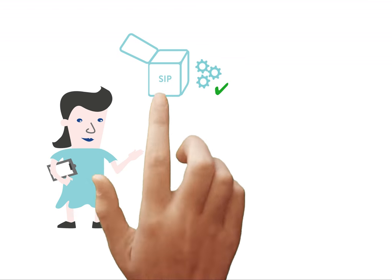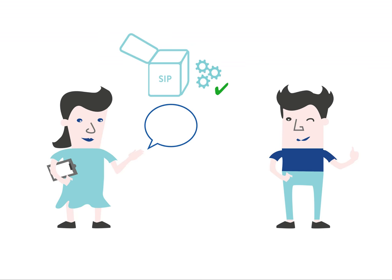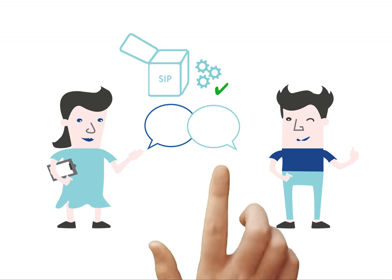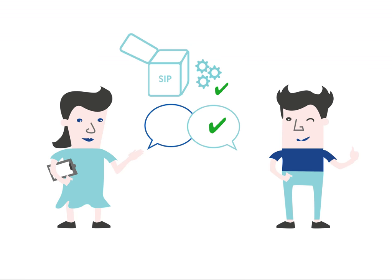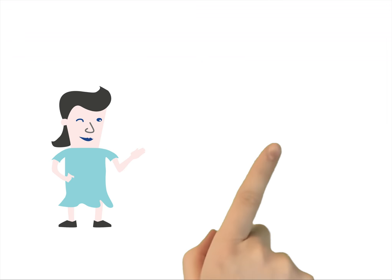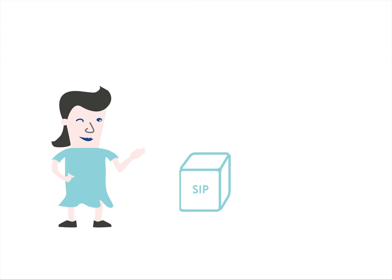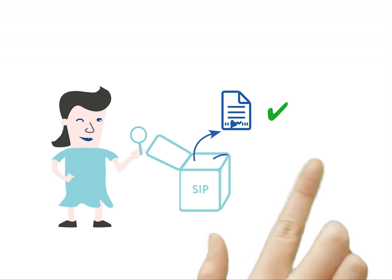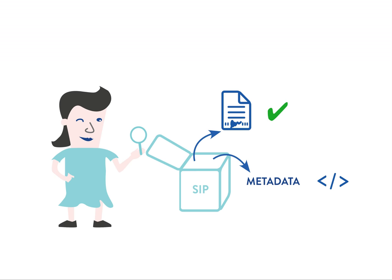Dante gets a notification from Nora about the successful automatic checking of his data. She will now have a closer look at his files to see if the documentation allows third parties to understand the dataset, and if Dante might have forgotten to attend to any sensitive information which should not be disclosed to the public.